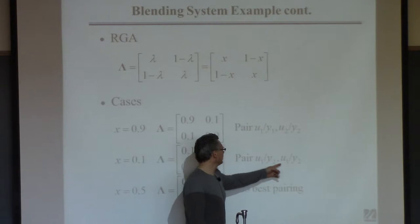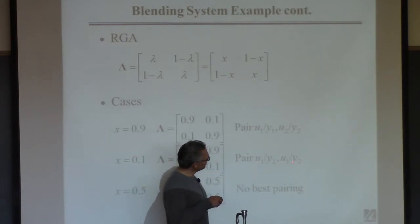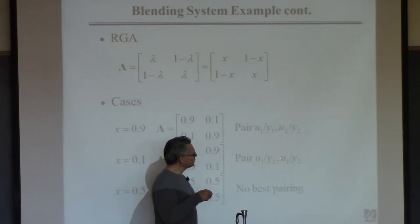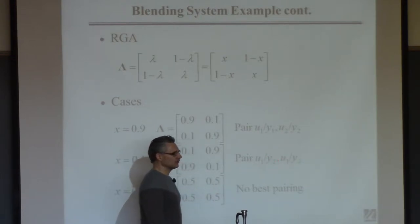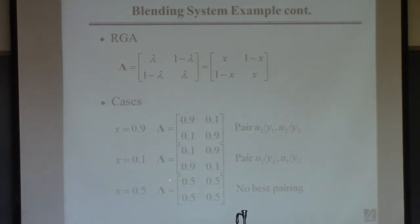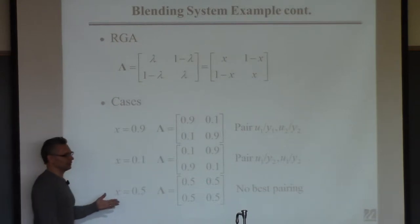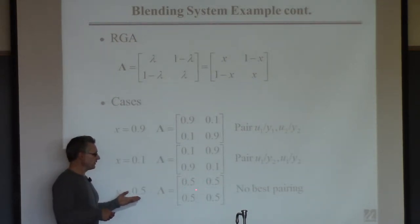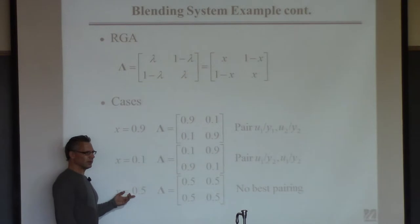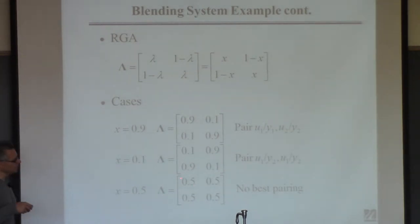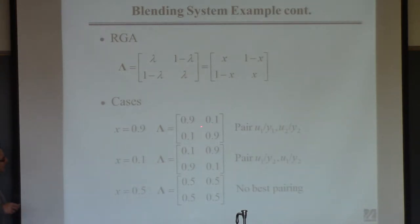There's a typo — U1, Y2 should be U2, Y1. An interesting scenario: what if the mole fraction is half A and half B? Now there's no good pairing. They're all the same according to this RGA, but there's a good chance none of them will work that well. Because the gain is reduced by half when you turn the other controller on, no matter what you do. So sometimes that's life — there is no good answer.